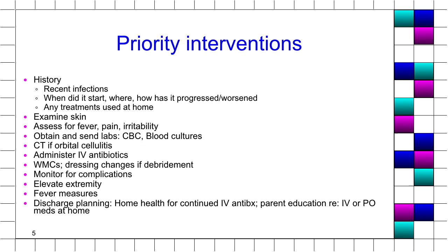Our priority nursing interventions include obtaining the history. Has this child had any form of infection in the recent past — in the last one to two weeks? You want to find out from the parents when it started, where it started, where they discovered a particular lesion, how it has progressed, and especially how quickly it progressed. If a mother says 24 hours ago this child was up playing and now they can barely interact with you, that is a very sick child and you need to get them in front of a provider.